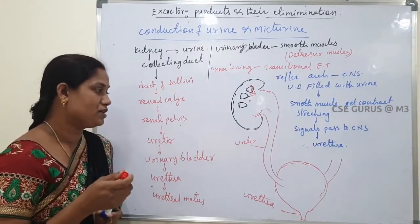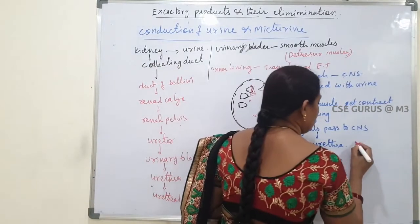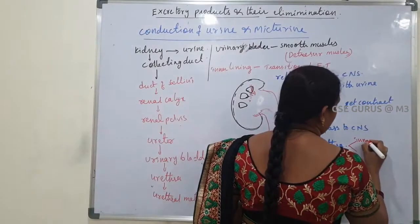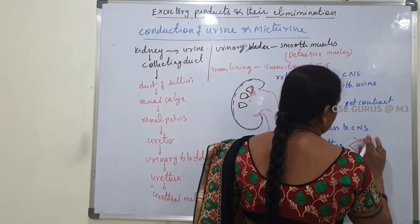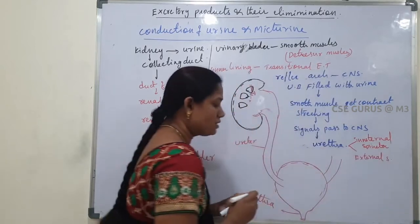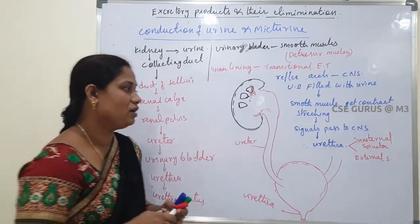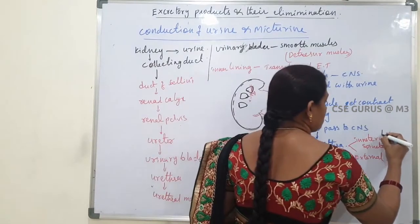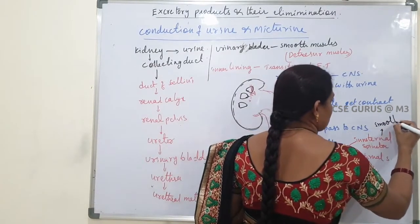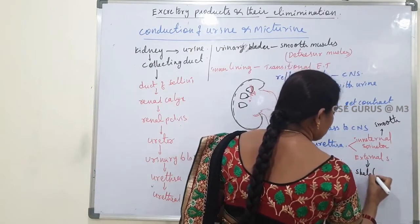The urethra has two sphincters: an internal sphincter and an external sphincter. The internal sphincter is made up of smooth muscle, and the external sphincter is made up of skeletal muscle.